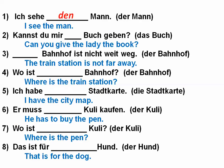'Ich sehe den Mann' — I see the man. Remember in the accusative, der changes to den, die and das stay the same. 'Kannst du mir das Buch bringen?' — Buch is a direct object. 'Der Bahnhof ist nicht weit weg' — Bahnhof is the subject of the sentence, nominative. 'Wo ist der Bahnhof?' — nominative. 'Ich habe die Stadtkarte' — I have the map. 'Er muss den Kuli kaufen' — he has to buy the pen; the pen is the direct object. 'Wo ist der Kuli?' — nominative. 'Das ist für den Hund' — für is an accusative preposition.